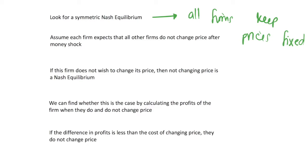Let's look for a symmetric Nash equilibrium by first assuming that every firm expects all other firms do not change their price after a money shock. In a Nash equilibrium, everyone acts optimally given every other firm's actions. If the individual firm we are looking at does not change its price, and every other firm is also not changing its price, then because all firms are identical, everyone is choosing a best response — so we have a symmetric Nash equilibrium.